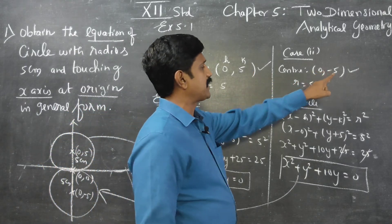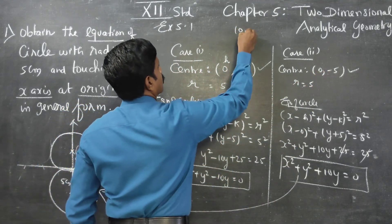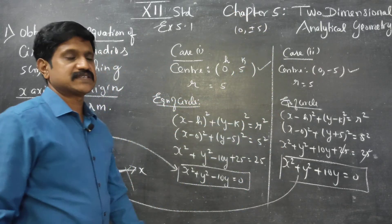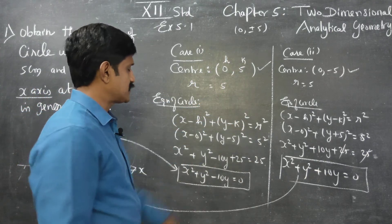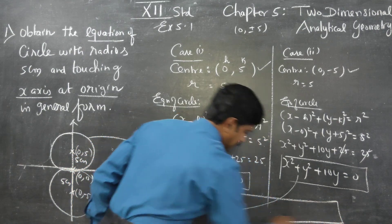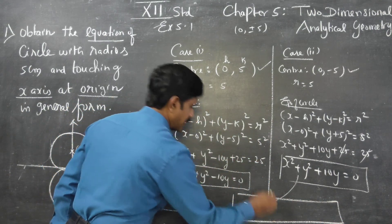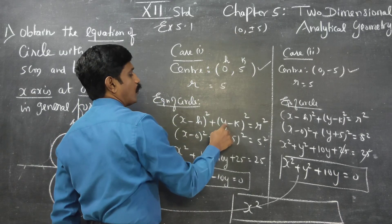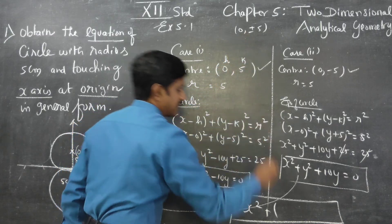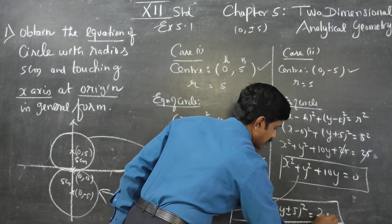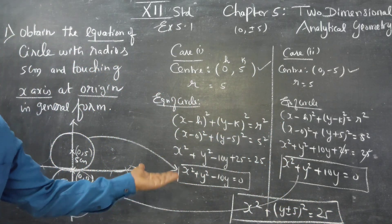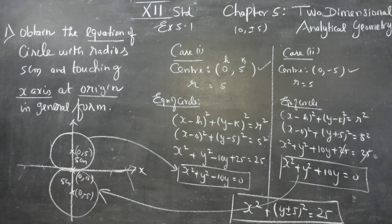The two centers are (0, 5) and (0, -5), which can also be written as (0, +r) and (0, -r) where r = 5. Another generalized form: since h = 0, we can write x² + (y - 5)² = 25 or x² + (y + 5)² = 25. These are the complete solutions. Thank you.